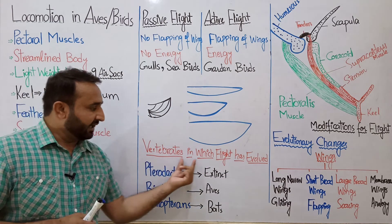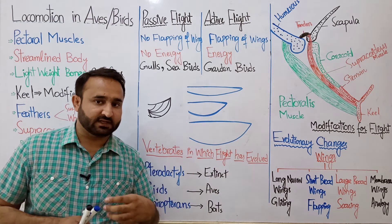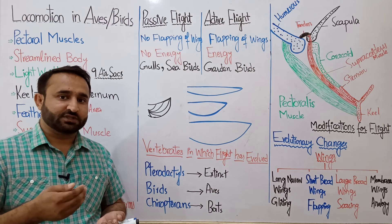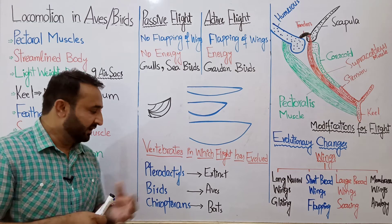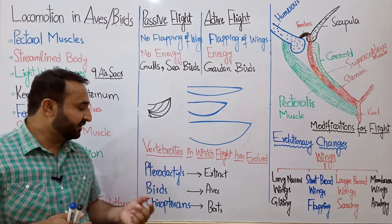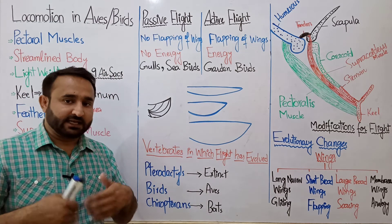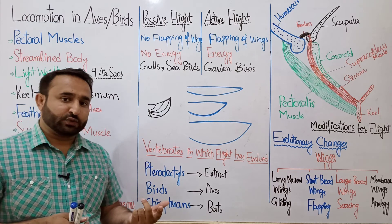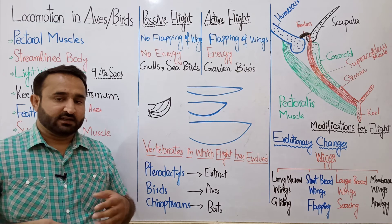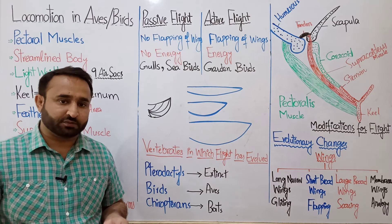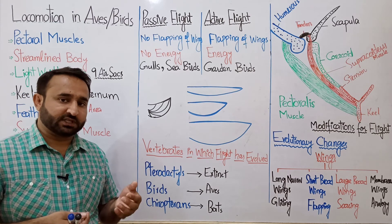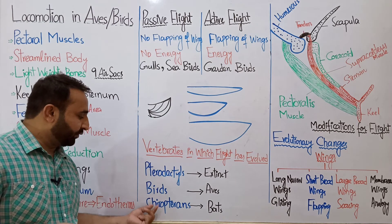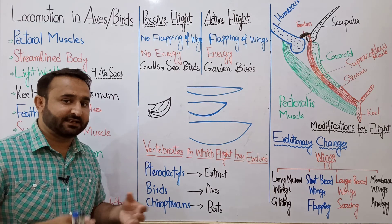Vertebrates in which flight has evolved — तीन groups हैं। एक है pterodactyls — ये extinct हो चुके हैं, जैसे dinosaur की films में उड़ने वाले dinosaurs होते हैं — उनको pterosaurs कहते हैं। दूसरे birds हैं जो class Aves से belong करते हैं — इनके wings, feathers, converted four limbs हैं। कुछ birds ने flight को discard कर दिया है जैसे ostrich — इनके wings और feathers भी हैं، endothermic भी हैं، لیکن انہوں نے زمین پر چلنا ज्यादा prefer किया۔ Birds ہمیشہ bipedal ہوتے ہیں — یعنی ان کے hindlimbs walking کے لیے use ہوتے ہیں۔